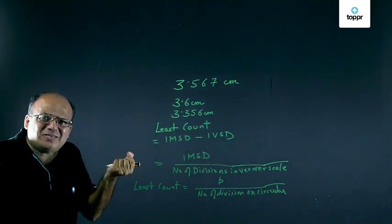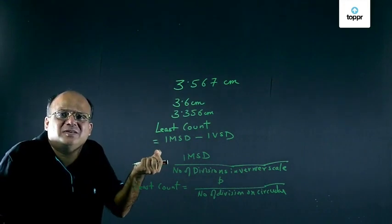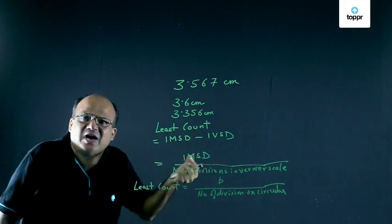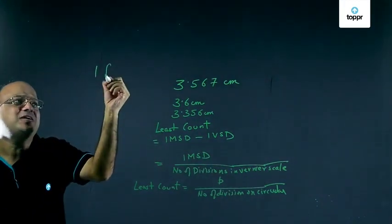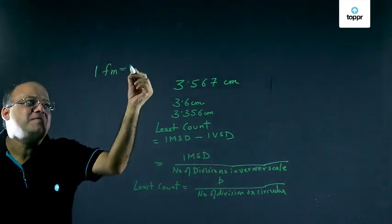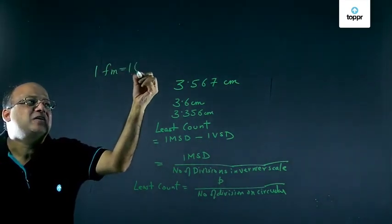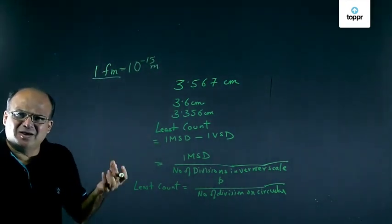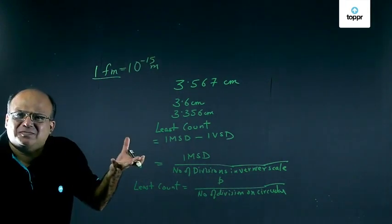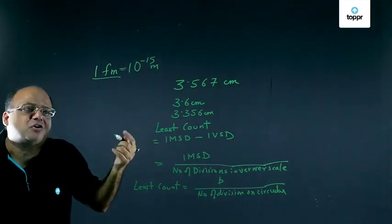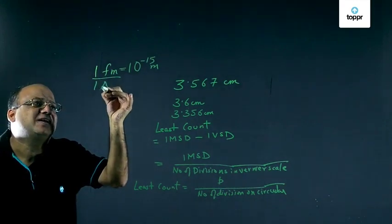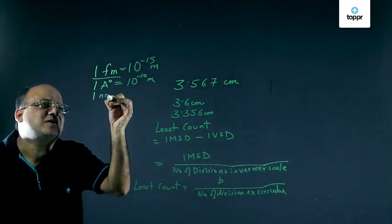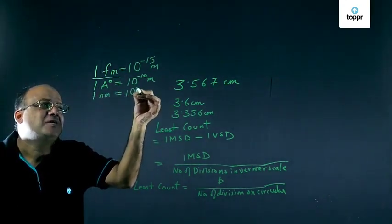Small length we measure in units called femtometer. The radius of the nucleus is in order of 10 to the power minus 14 meters, and that we measure in femtometer. What is one femtometer? One femtometer is 1 FM and that is 10 to the power minus 15 meters. This is also known as Fermi. The radius of an atom we measure in nanometer or angstrom. What is one angstrom? That is 10 to the power minus 10 meters. And what is nanometer? One nanometer is 10 to the power minus 9 meters.